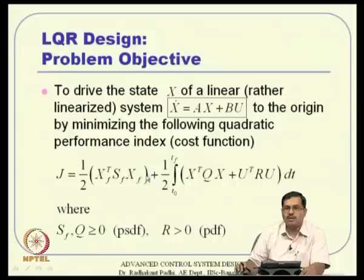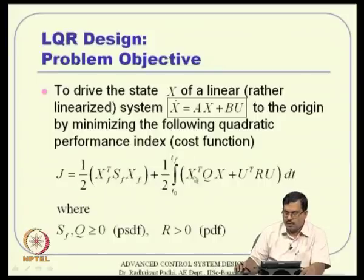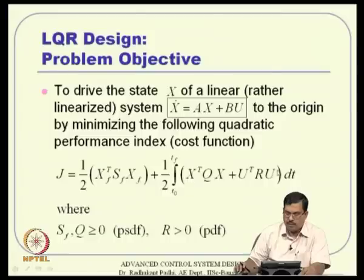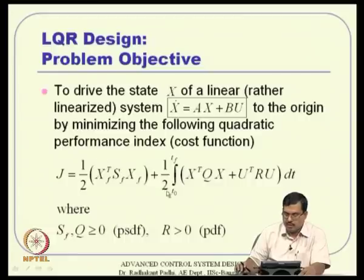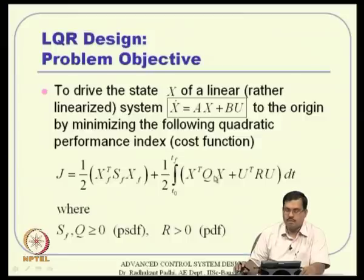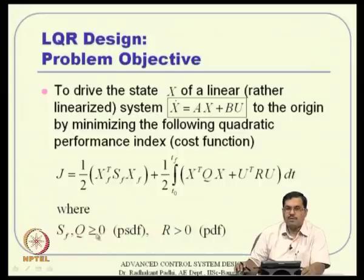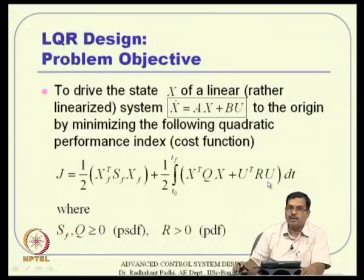To drive X to zero, you minimize a quadratic performance index where each term is quadratic in nature: a final penalty term (1/2) xf^T Sf xf and path penalties (1/2)(x^T Qx + u^T Ru). The aim is to minimize the state towards zero, provided Sf and Q are positive semi-definite matrices and R is a positive definite matrix.